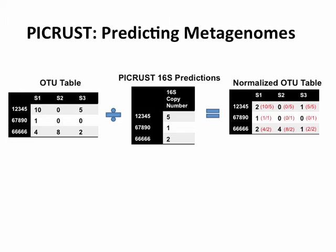There was a paper that came out right before PICRUSt that showed it's important to correct for copy number, and they provided a way to do it. When we were doing PICRUSt we said we could probably predict 16S copy number the same way we do with all our other functions. So we actually estimate 16S copy number and allow you to normalize your OTU table to account for the problem of multiple 16S gene copies.